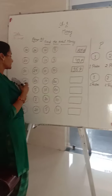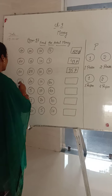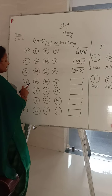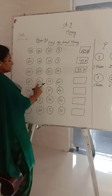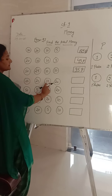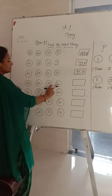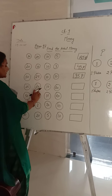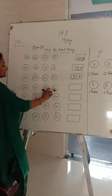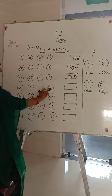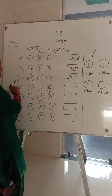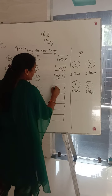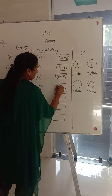Next is 50 paisa, 20, 10, 10, 20. Kitne paisa hoi hii total? 20, 30, 40, 50, 60, 70 and 75 paisa.